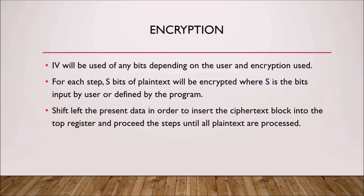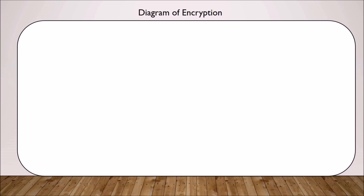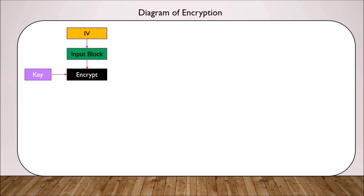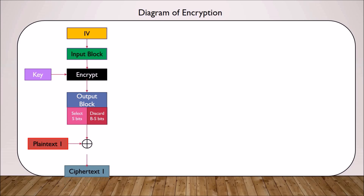Shift left the present data in order to insert the cipher text block into the top register and proceed the steps until all plain text are processed. This is an image of the overall diagram of encryption. Let me show you a better one. Over here, the first input block is IV. Then move to encryption. After encryption, it will produce an output block. The output block consists of two parts: select S bits and discard B-S bits. The selected S bits will XOR with the first S bits of plain text 1 to produce cipher text 1.